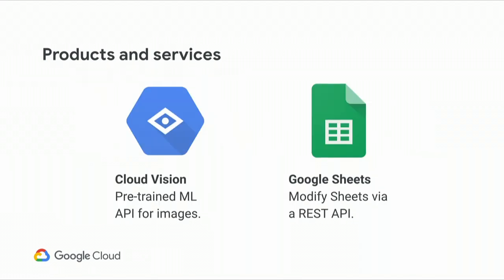Cloud Functions then contacts Cloud Vision and says, I have an image — tell me what categories apply to it. So maybe it's an image of blue sky. Cloud Vision is going to return labels like blue, sky, nature. Then Cloud Functions will take those categories and export them to a Google Sheet using the Sheets API.